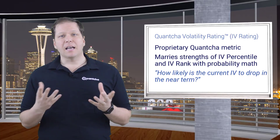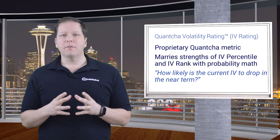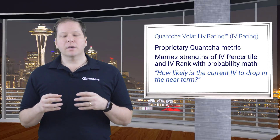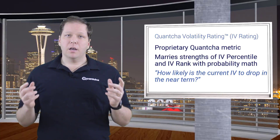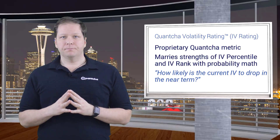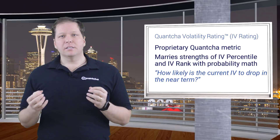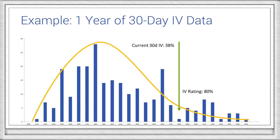The final metric we'll look at is IV rating, a proprietary data point developed here at Quantcha. This metric attempts to marry the strengths of IV rank and IV percentile with probability math in order to provide a clear directional indicator. It answers the question: how likely is the current volatility to drop in the near term? Returning to our earlier example, the IV rating methodology models a probability curve for the expected volatility based on historical data. This accounts for the range, density, magnitude of movement, and more. For this particular history, the IV rating was calculated as having an 80% weighted probability of decline in the near term.